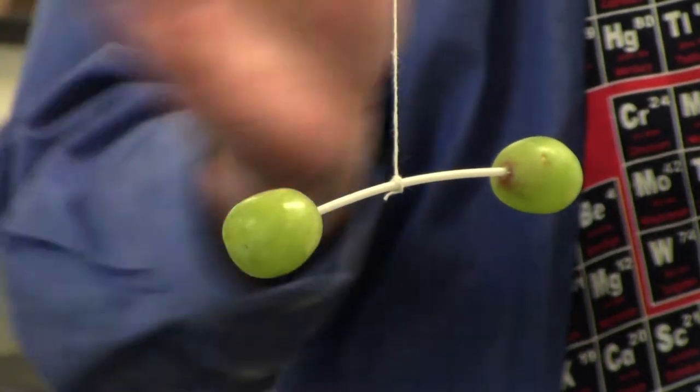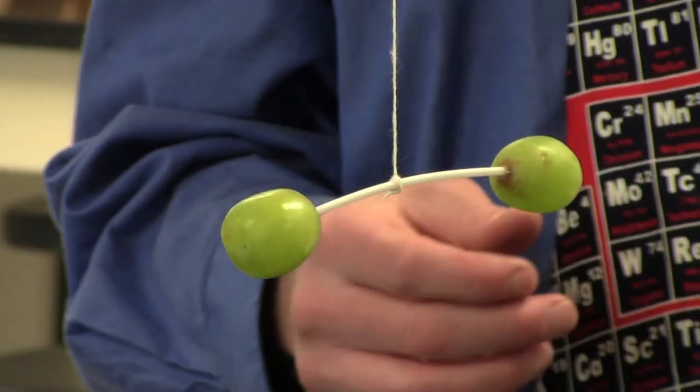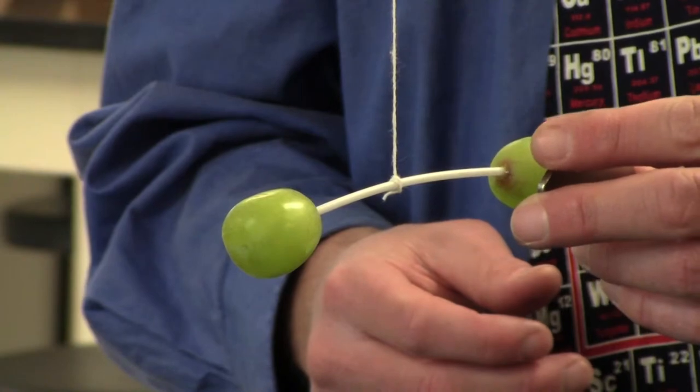And you can see the grapes are not swinging or moving on their own right now. And now let's show the magnetic field to the grapes.